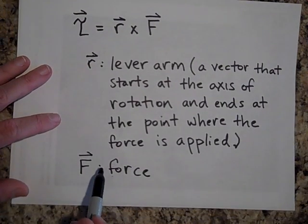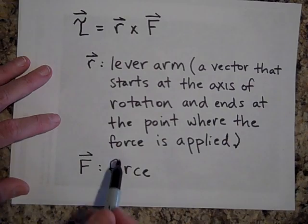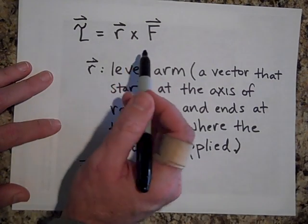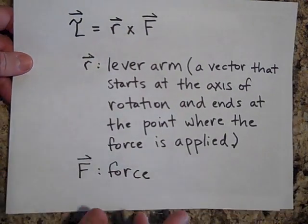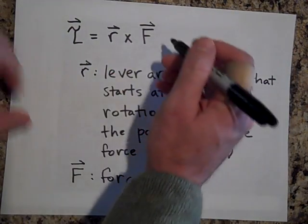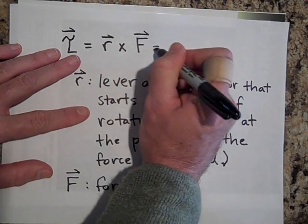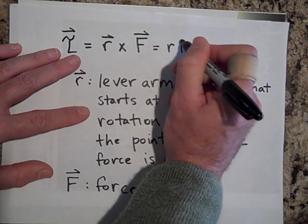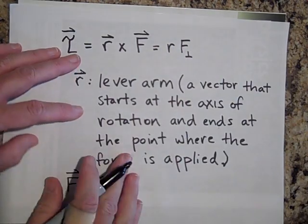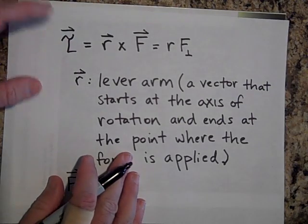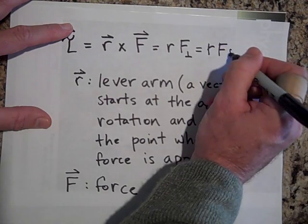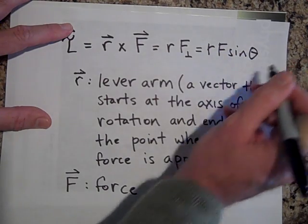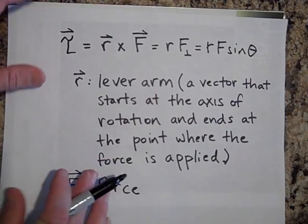The F is just the force then. But remember, this is the cross product. So we only want the part of the force that's perpendicular to R. I just want the part of F that's perpendicular to R. So I could write this as R F perpendicular. Another way of writing it is R times F times the sine of theta if theta is the angle between R and F.